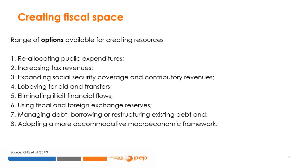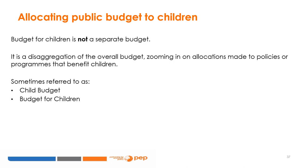Regardless of how much fiscal space is available, it is vital to gain insight into the proportion of the public budget allocated to policies that benefit children. Child budgets, child budgeting, child-centric budgets, children's budgets, and public finance for children are all terms to describe this kind of analysis. Note that they do not refer to separate budgets—governments don't have earmarked child budgets. Instead, it refers to an analysis of which lines within an overall budget are dedicated to policies that benefit children and what proportion of the overall public budget this constitutes.